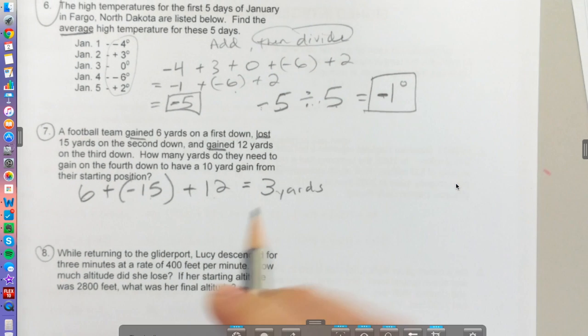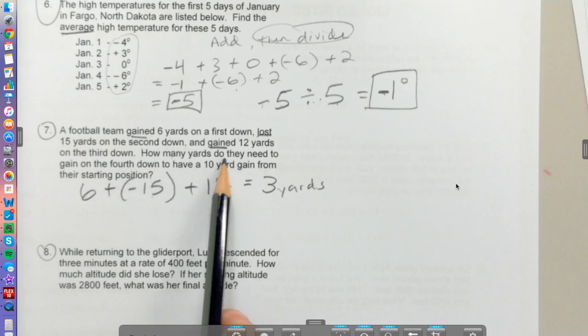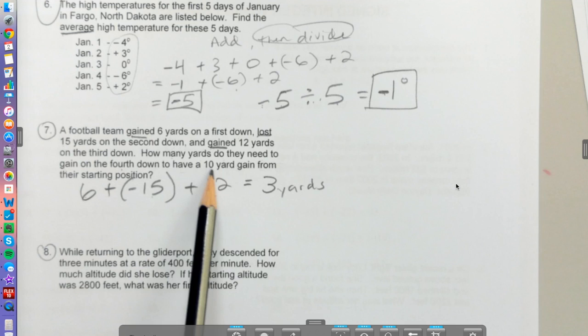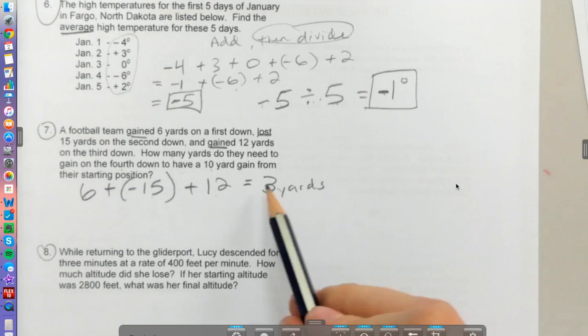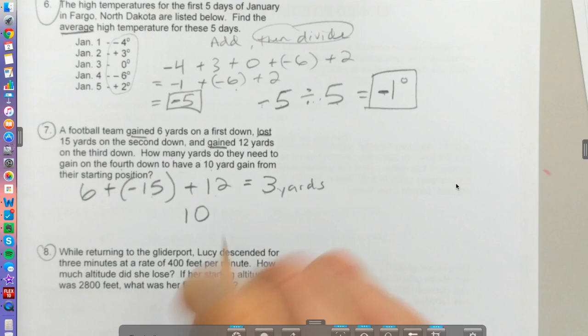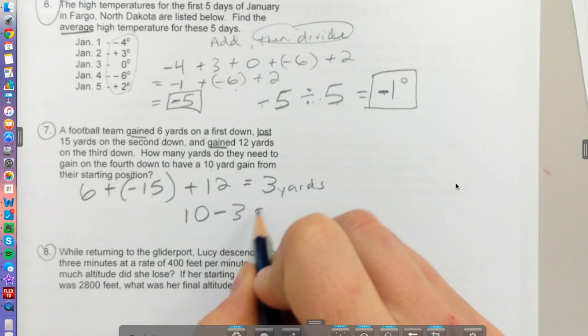Right now we're at 3 yards. What's the question asking again? How many yards do they need to gain in the fourth down? They got one more down to have a 10 yard gain from the starting position. So I'm 3 yards from the starting position, I need to be 10 yards, so I need to go 7 more yards. Hope that makes sense, otherwise ask me any questions you have.